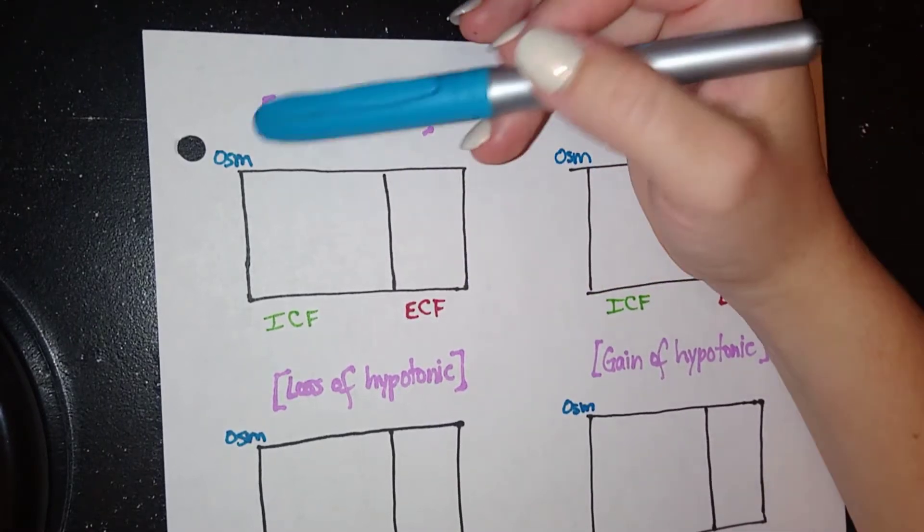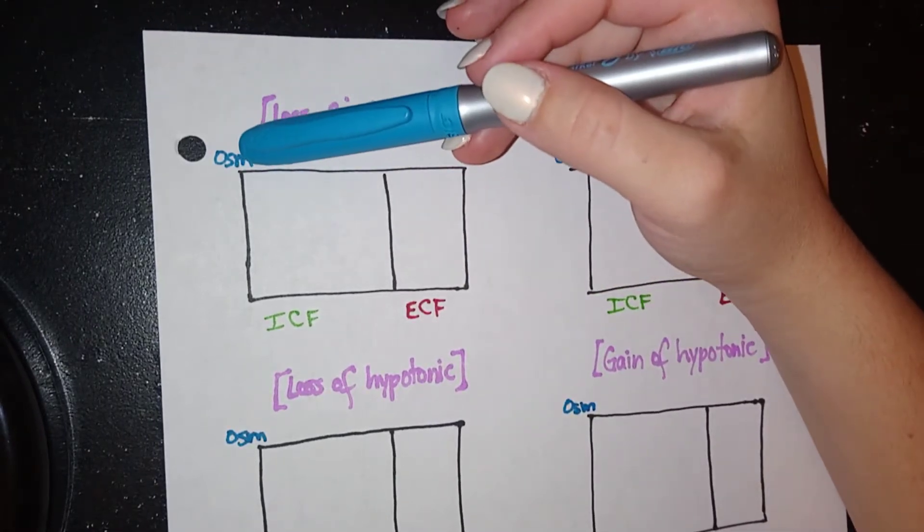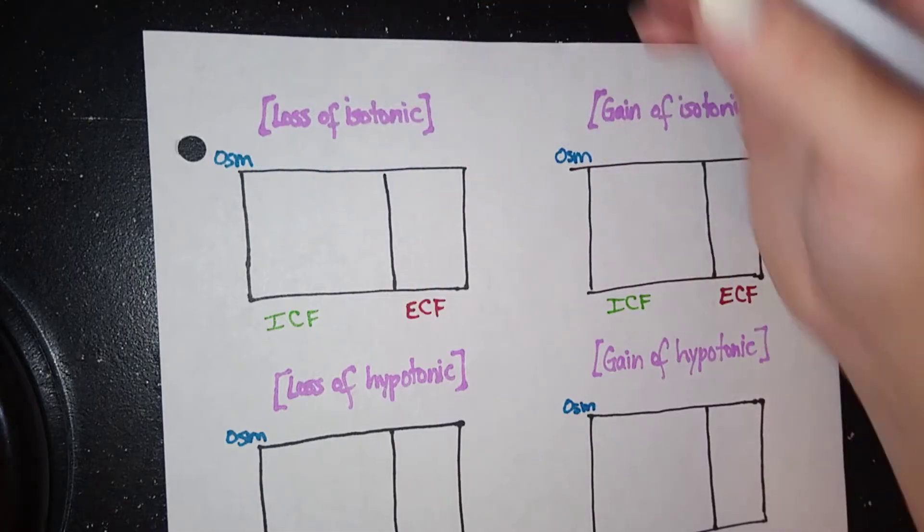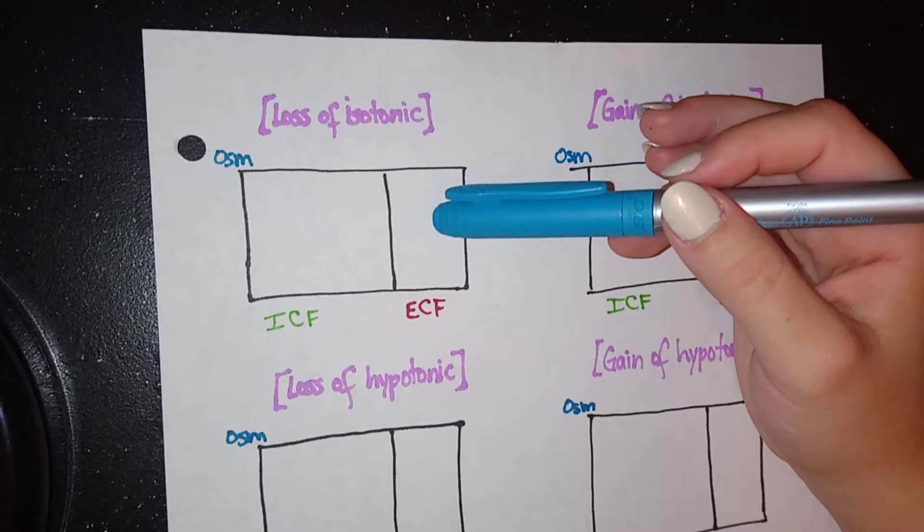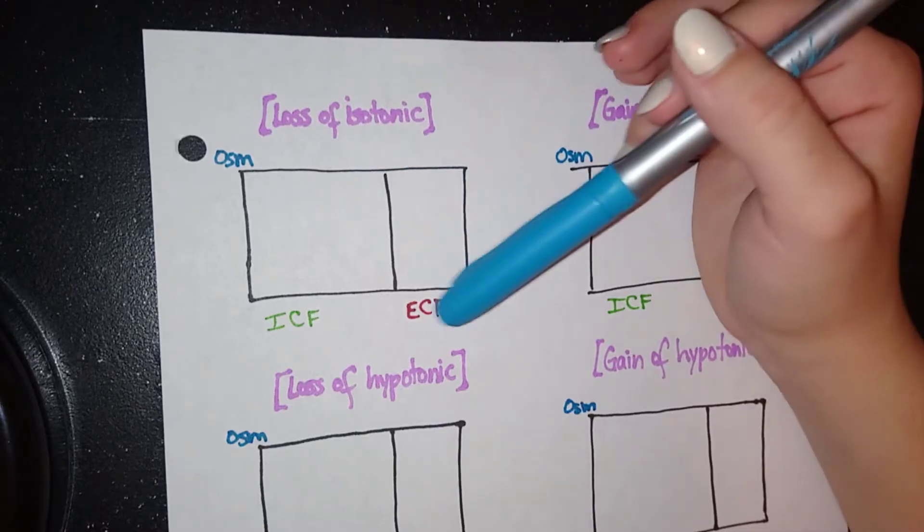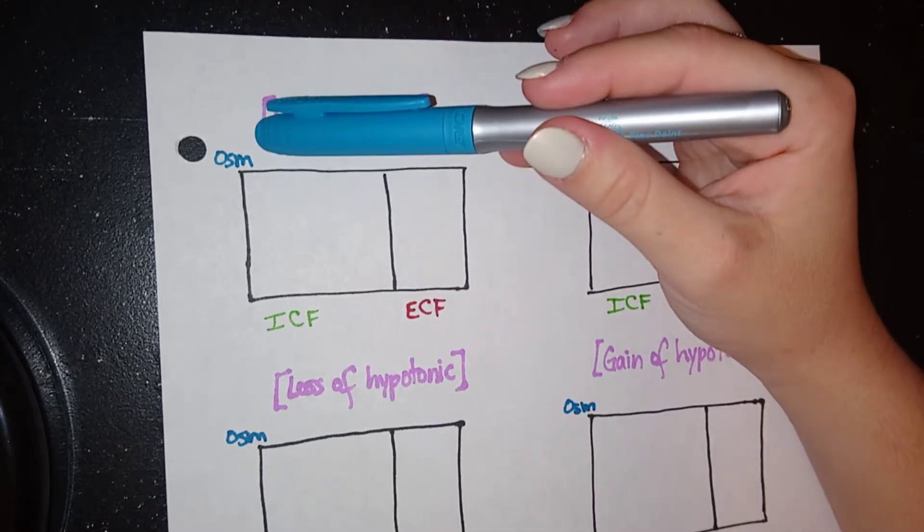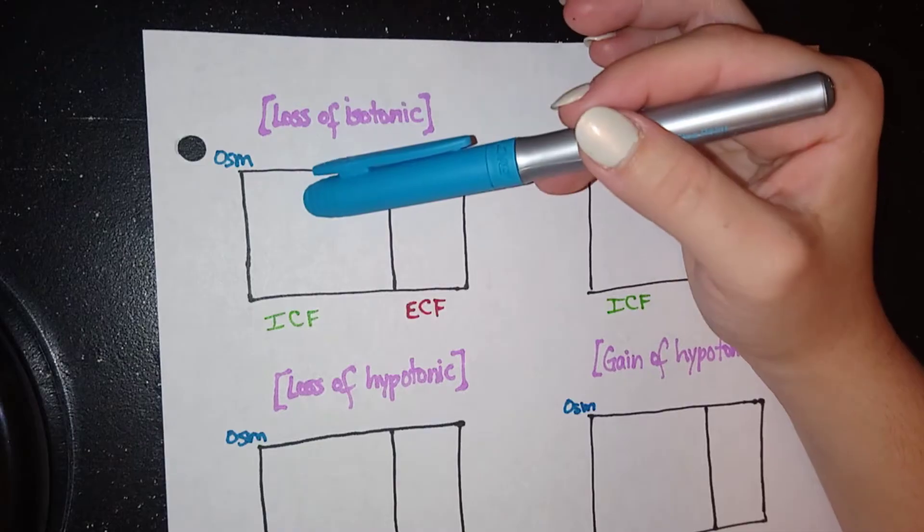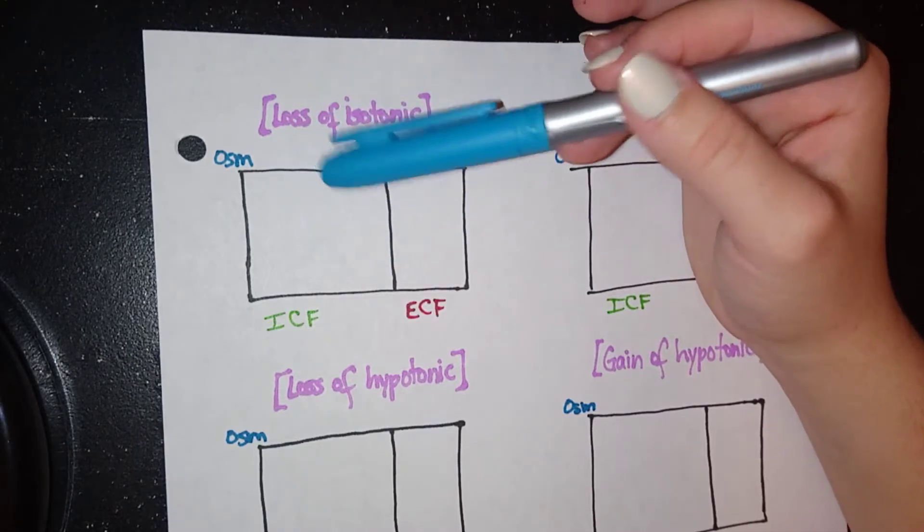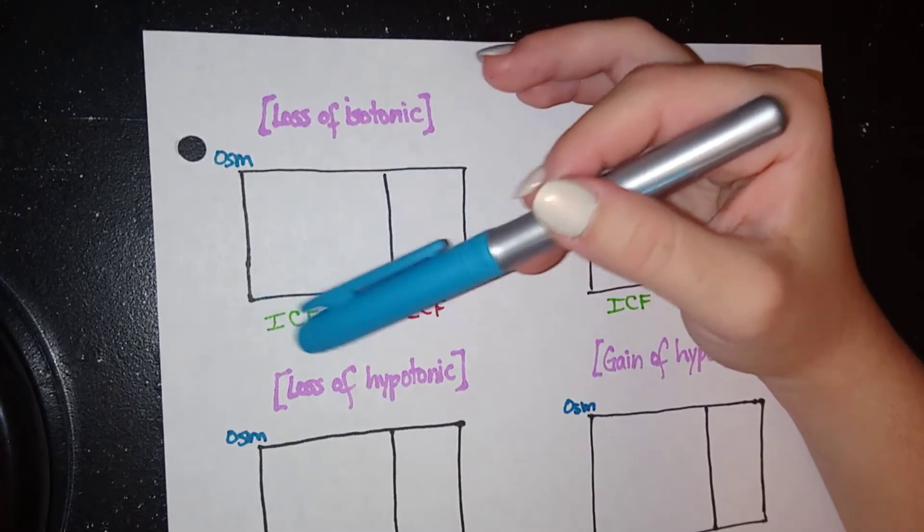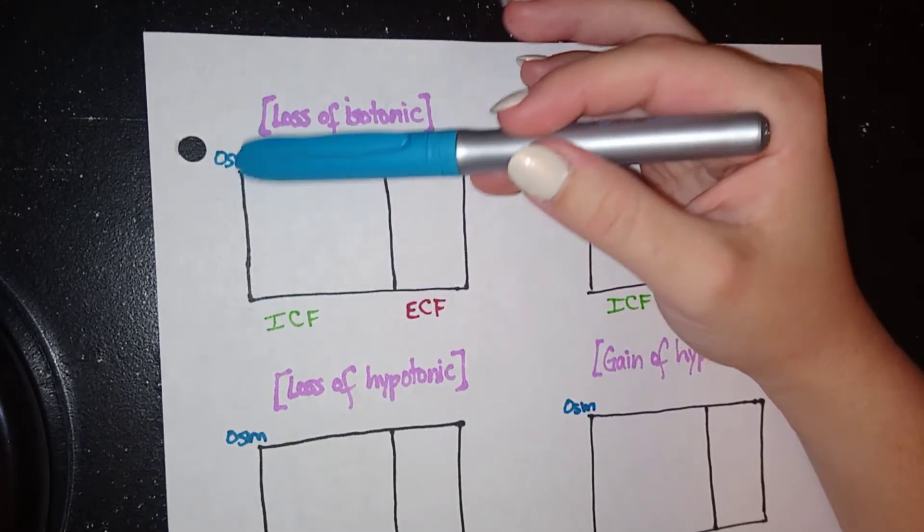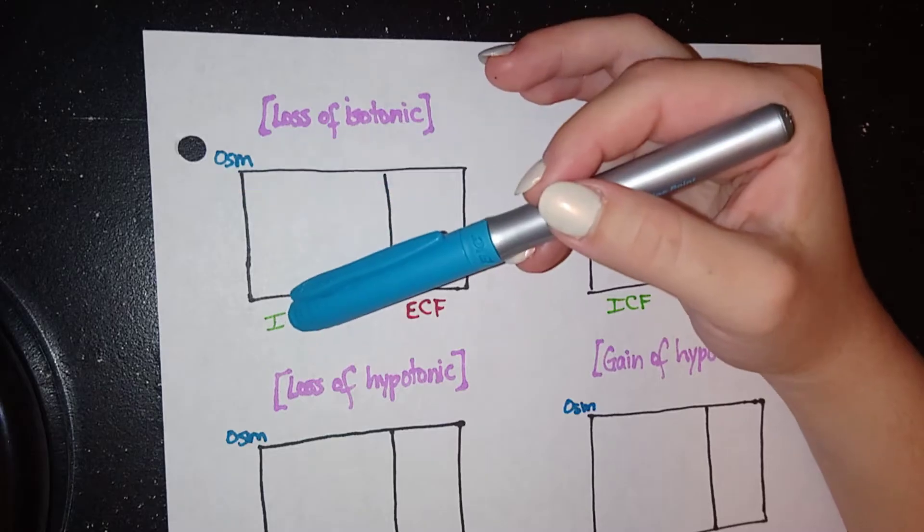So the way I tackle these is that I look at osmolarity first. If there's no change in osmolarity, then I'm just going to move on to the second step, which is to look at ECF and see what changes here. If osmolarity, however, does change, either increase or decrease, I will expect to see a change in not only ECF, but also ICF. So if there's no change in osmolarity, leave ICF alone.